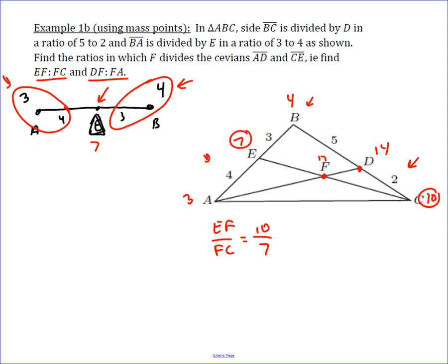And then DF to FA is going to be 3 to 14. Mass of 3 here, mass of 14 here. So this is in the opposite proportion, 3 over 14. So that's a very basic and easy way that we apply mass points.